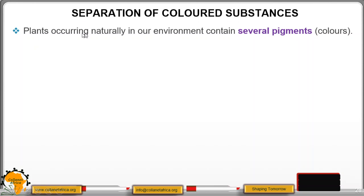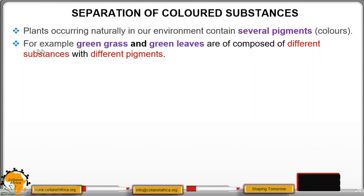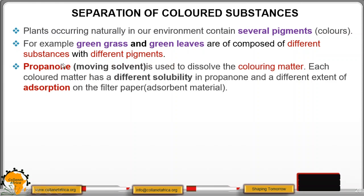Plants occurring naturally in our environment contain several pigments, or what we call the colors. For example, green leaves or green grass are composed of different substances with different pigments or colors. Propanol, which is the moving solvent, is used to dissolve the coloring matter in those plants.